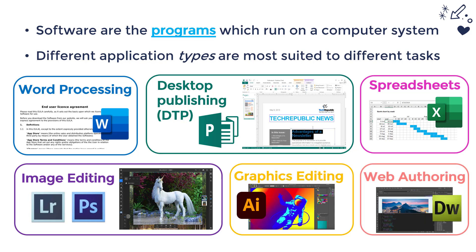A final example of an application type is web authoring software. You may know that you can make a website using a really basic text editor like Notepad, but alternatively you can access tools like Adobe Dreamweaver, which do a lot of the job for you and are maybe a little bit easier to use — a little bit easier to visualise the sorts of images and other formatting. There are other ones too: you can do sound editing if you're doing a podcast, you might want to make a presentation in Microsoft PowerPoint, or use a web browser to view a website. If you wanted to do a professional work plan, you might use project management software. So there are loads of different types of software, and you just need to be able to — given a scenario — suggest some type of software which may be most appropriate.